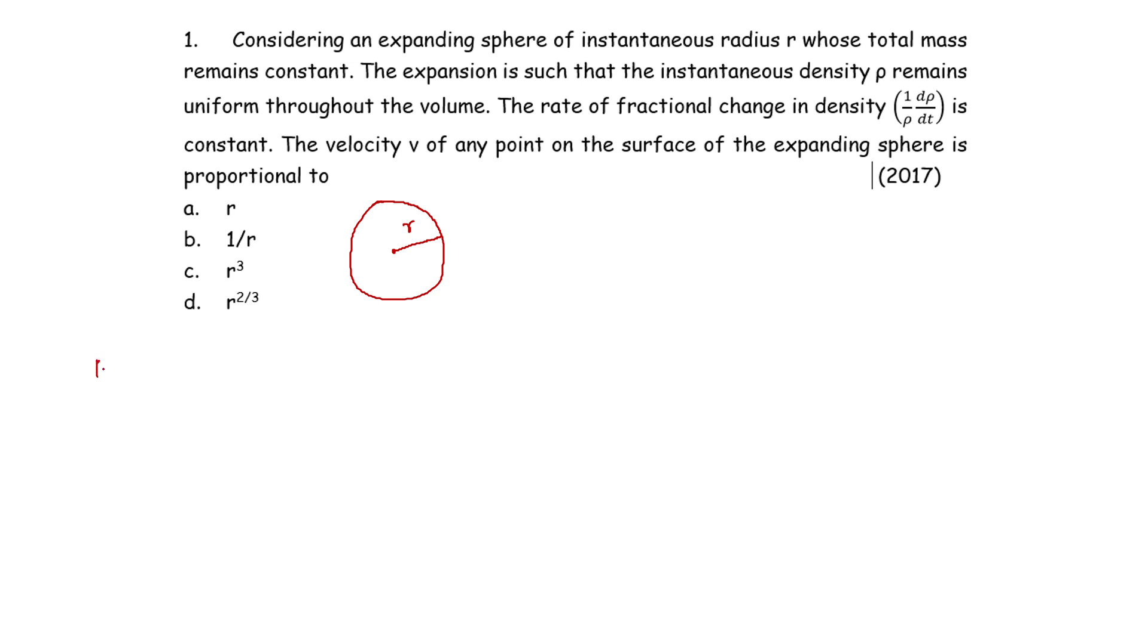The total mass remains constant. Suppose capital M be the mass of the sphere, and this is given as constant. The expansion is such that the instantaneous density ρ remains uniform throughout the volume. That means as this sphere expands, the density is equally distributed in any of the sphere in an instant. So density may be uniform, but it is uniform for each sphere.